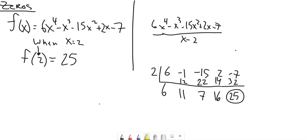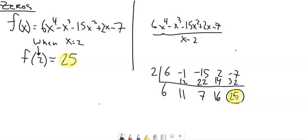My remainder was 25, and when I evaluated f(2) I also got 25 — this is kind of crazy, and it's always true. Doing the synthetic division, this remainder is the same as if you had plugged 2 in and evaluated it. It's called the Remainder Theorem. This was once a really fast way to evaluate things instead of taking values to high powers. So when the remainder is 0, that means the divisor is a factor of that polynomial, and that value is a zero of the function.